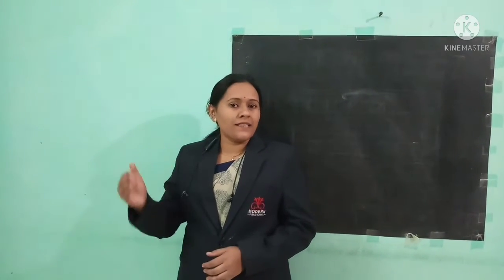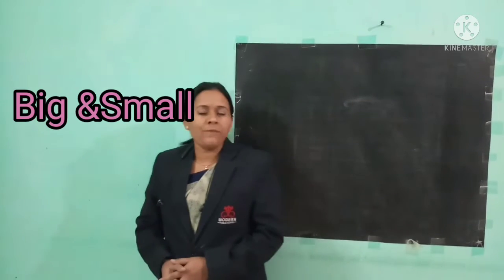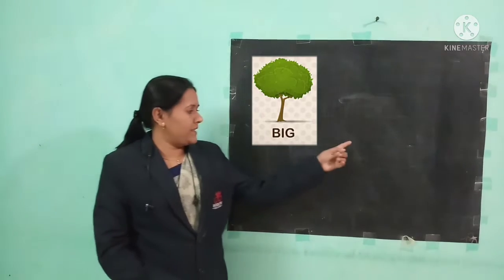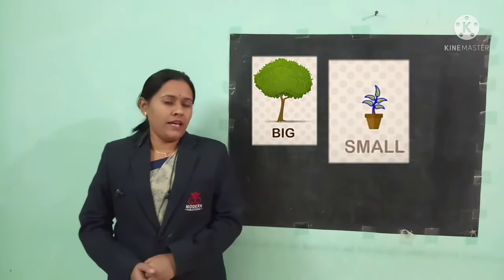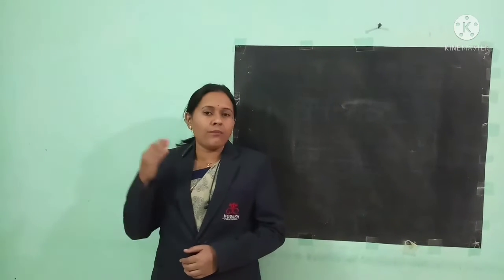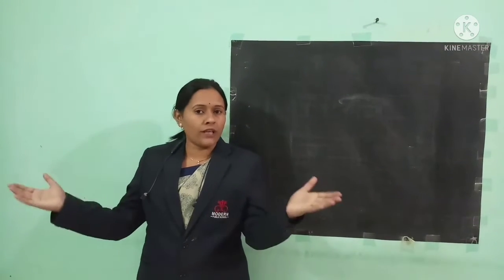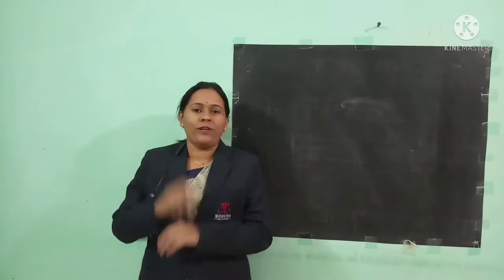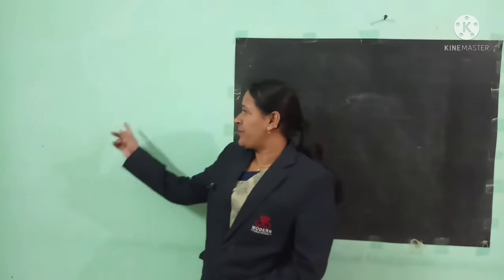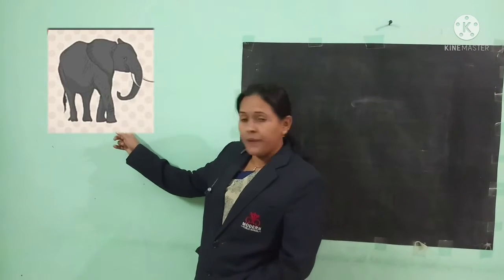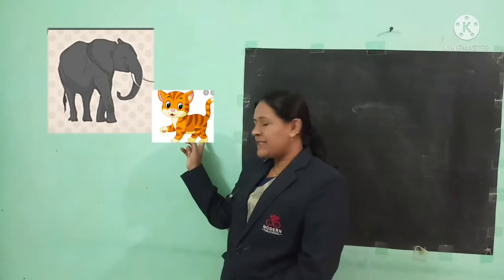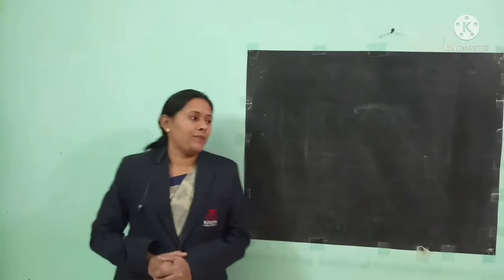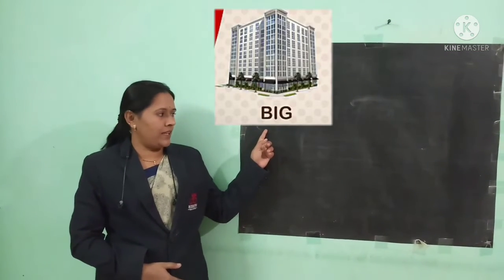Today we are going to learn the concept of big and small. See here — here is a big tree and this one is a small tree. Big means 'motha', small means 'chota'. Again, see here — this is a big elephant and this is a small cat.